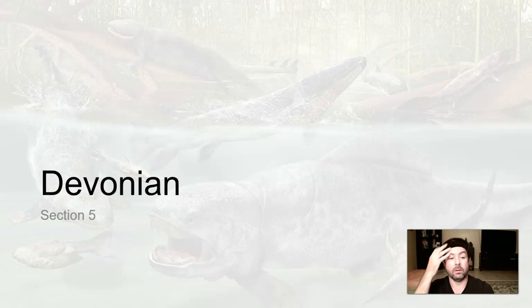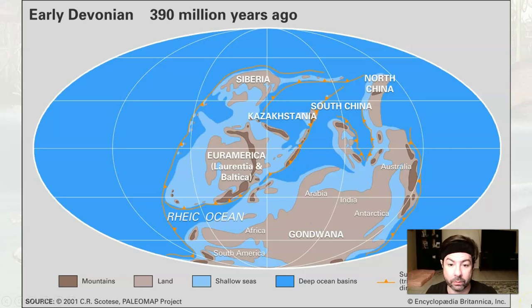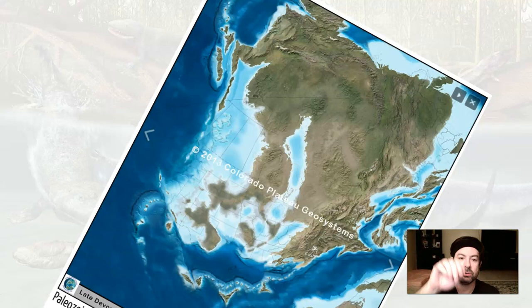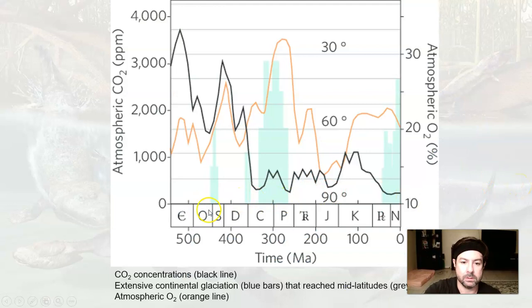Let's talk about the Devonian, the next period of time. Things are starting to come back together — Pangea is going to be forming eventually. North America is continuing to rotate, still mostly located around the equator, with transgressive and regressive events. In the Devonian, we see a drop in carbon dioxide and oxygen, and a little glaciation event at the end of the period.